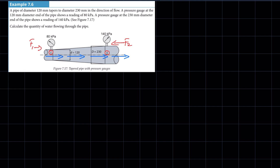Since section one is the smaller section, v1 will be greater than v2. Regarding acceleration, the fluid is decelerating, so acceleration is in the direction of flow, meaning F2 is greater than F1. From dynamics, the force going in the same direction as acceleration is greater than the force going against acceleration — meaning we expect p2 to be greater than p1. That's our free body diagram.